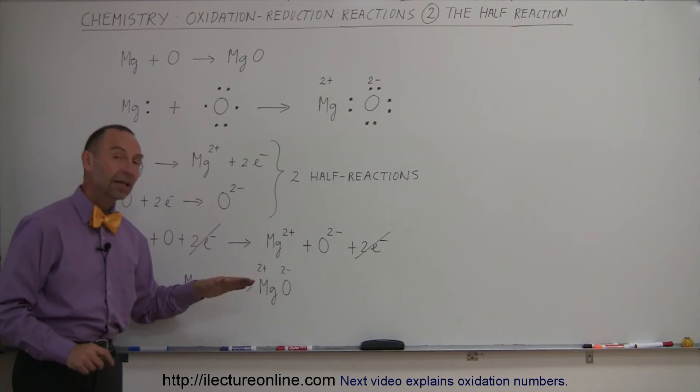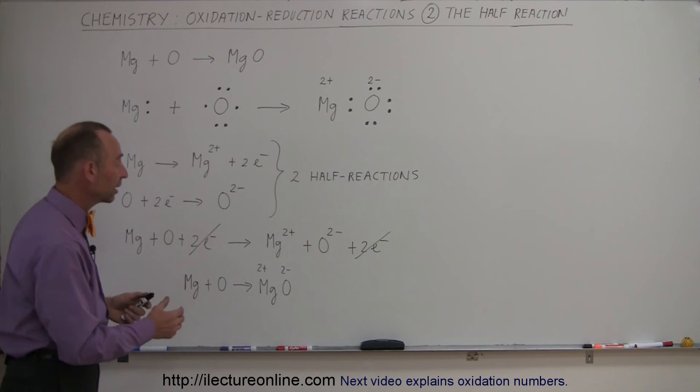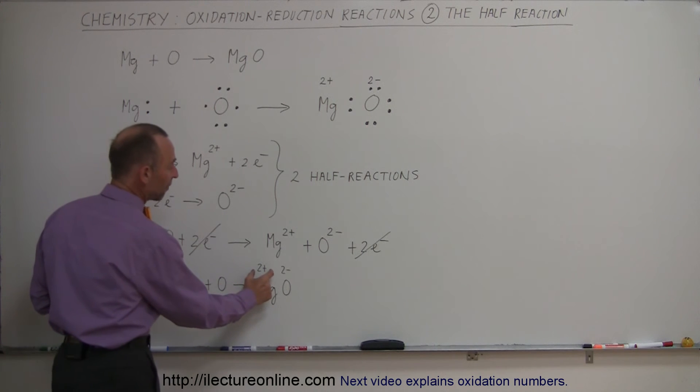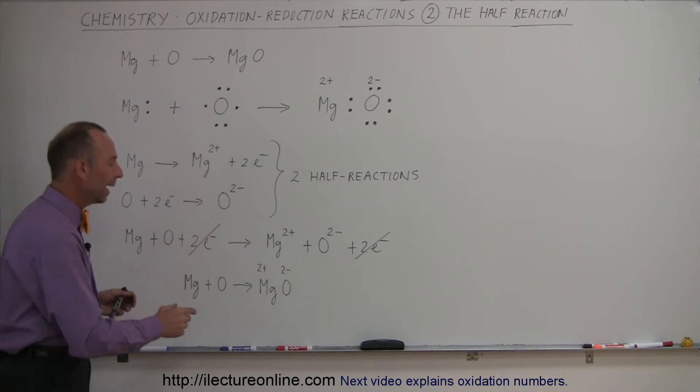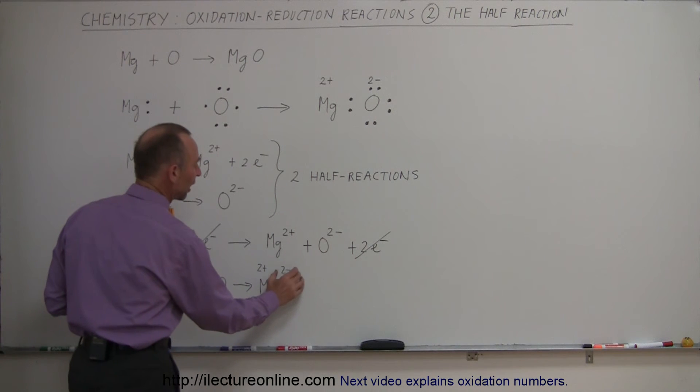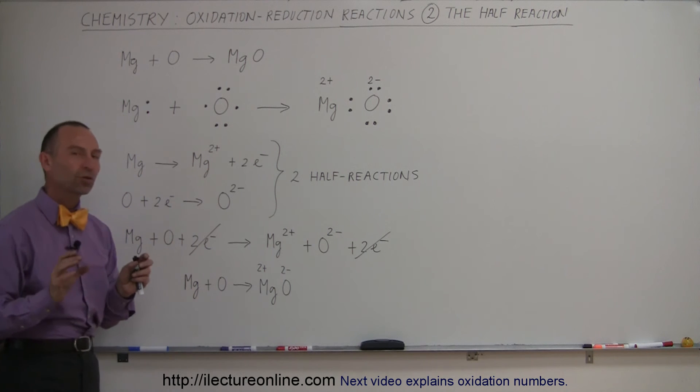And the indication then is, for the reduction oxidation indication, is that magnesium has now been oxidized and now has a plus two net charge, and oxygen has been reduced and has a negative two net charge. Now, of course,